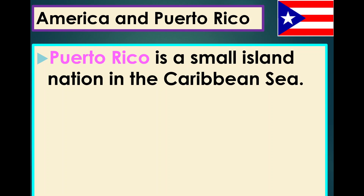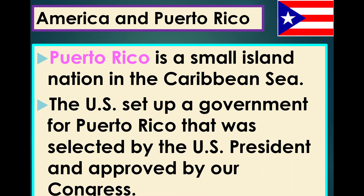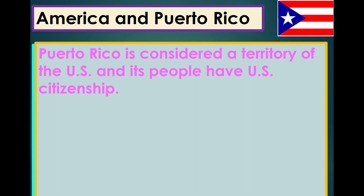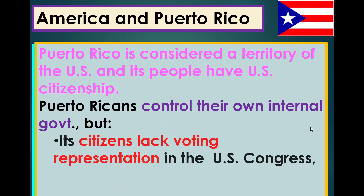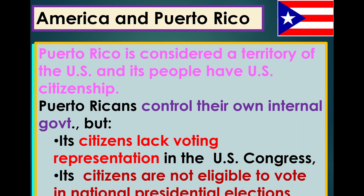Puerto Rico is a small island nation in the Caribbean Sea. The U.S. sets up a government for Puerto Rico that is selected by the U.S. president and approved by the U.S. Congress. Puerto Rico is considered a territory of the U.S., and its people have U.S. citizenship. Puerto Ricans control their own internal government, but Puerto Ricans do not have the ability to vote and don't have representation in Congress. Citizens are still not eligible to vote in national presidential elections.